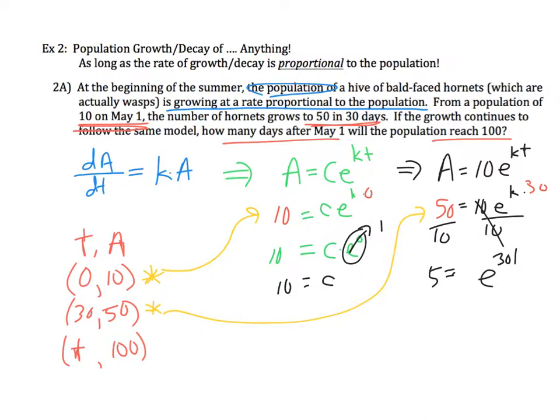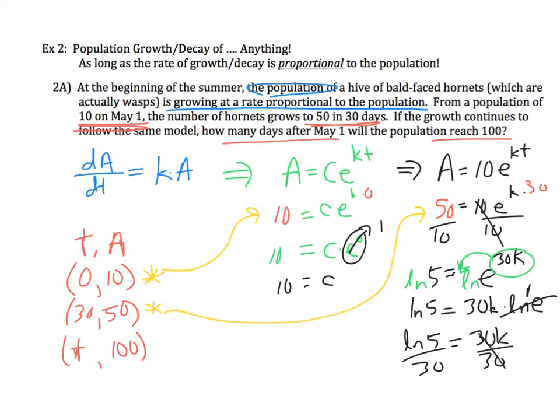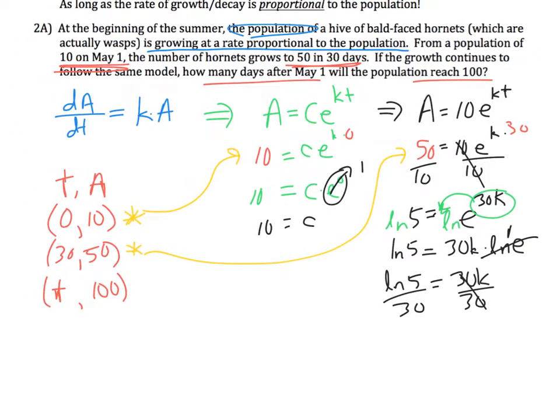Dividing by 10 to isolate my exponential part: 5 equals e^(30k). Now I'm going to solve for a variable in my exponent, which means I need to get out of the exponent. The only way I can do that is to take the natural log of both sides. That brings my power out front, cool property of logs. So I'm going to end up with ln(5) equals 30k times ln(e). Natural log of e is 1, so that goes away.